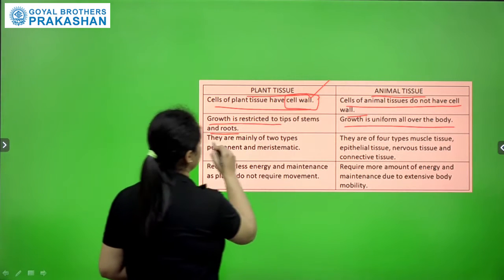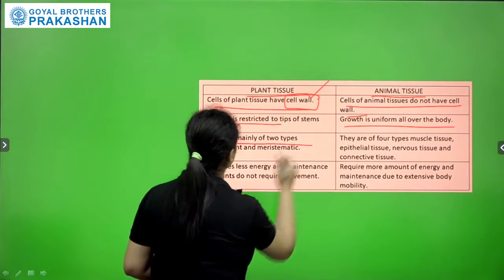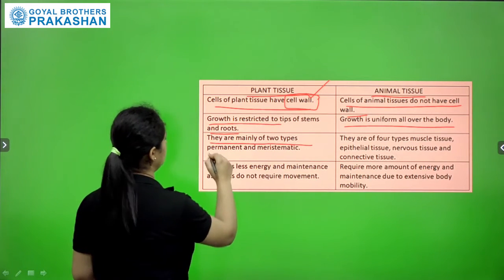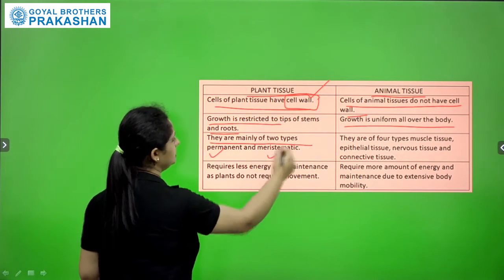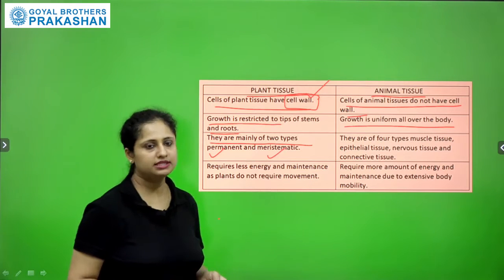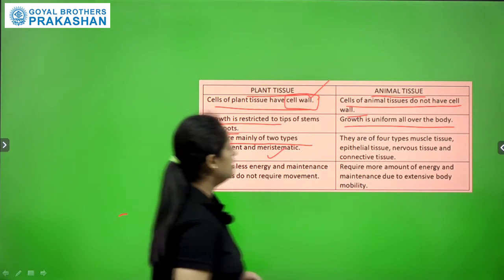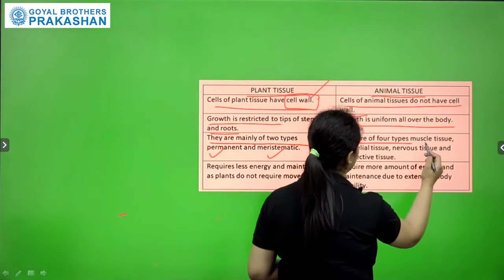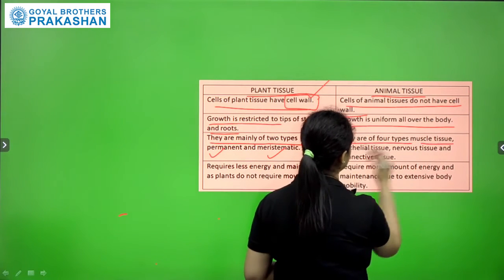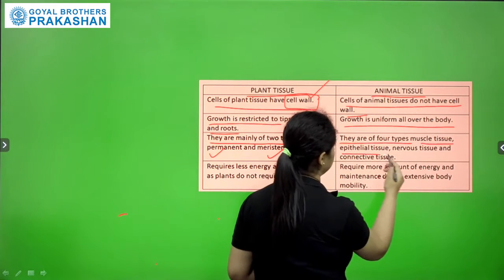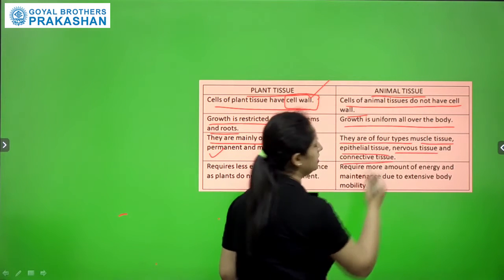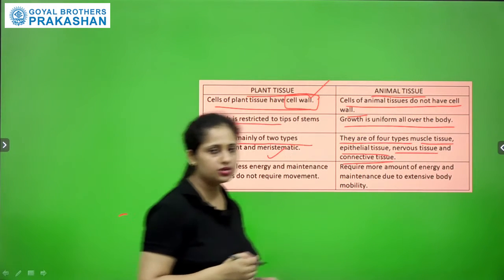Plant tissues are mainly of two types: permanent and meristematic. Animal tissues are of four types: muscular tissues, epithelial tissues, nervous tissues, and connective tissues.